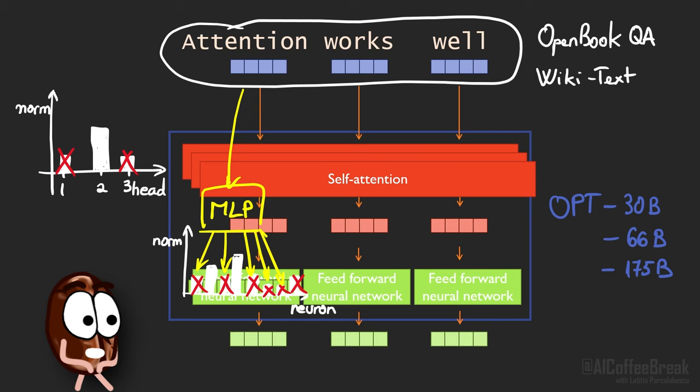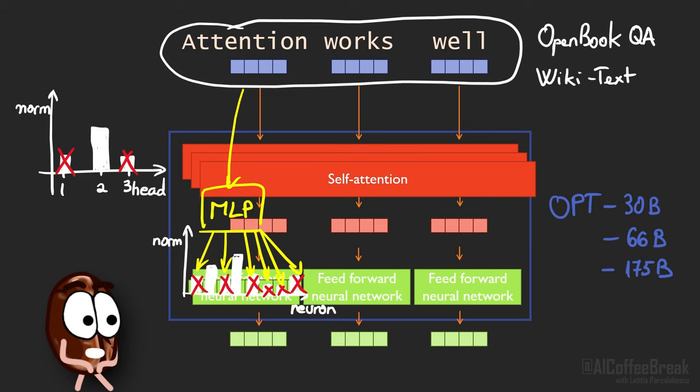So for Déjà Vu they used the recorded pairs of input and large vs small norms and trained for each MLP layer a simple, fully connected neural network with two layers to classify which of the MLP neurons has large norm.